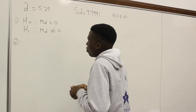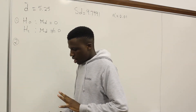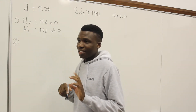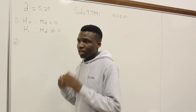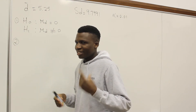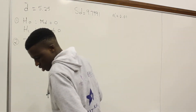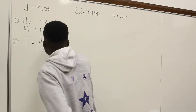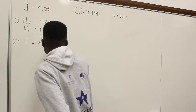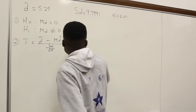Step two is the test statistic — write the formula we are going to use. Since the two samples are dependent on each other, the formula is: t equals the mean difference minus μ_d, divided by the standard deviation over the square root of n, where degrees of freedom is n minus one.